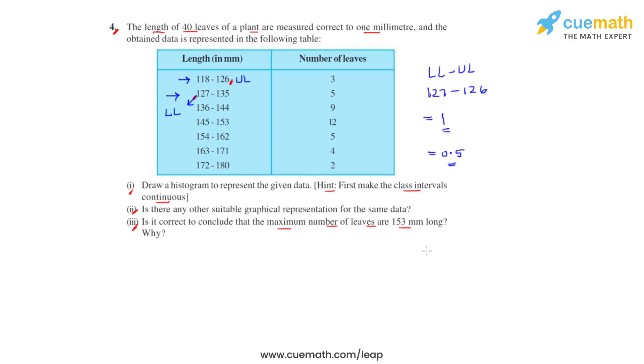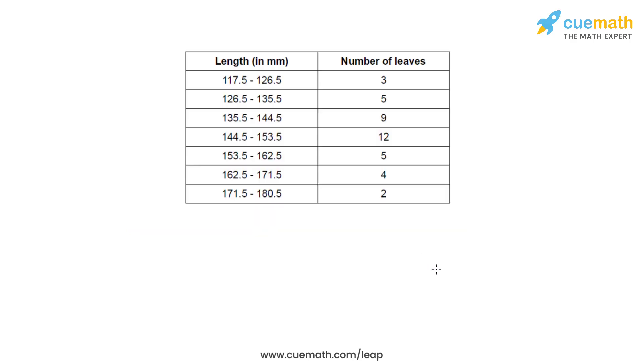The new table that we get by doing this is like this. So now in here we can see that the classes have become continuous because the upper limit of a class and the lower limit of the succeeding class is same, and that is the case for each of the classes. Now our next part is to draw the histogram for this given table.